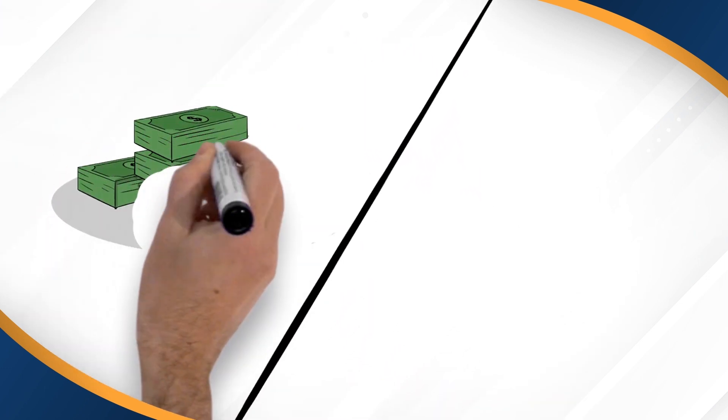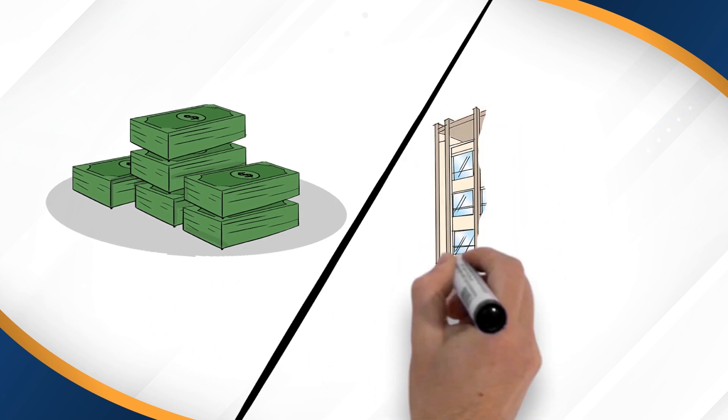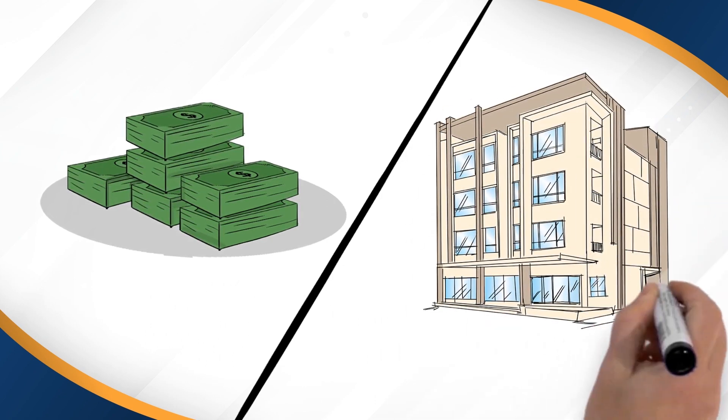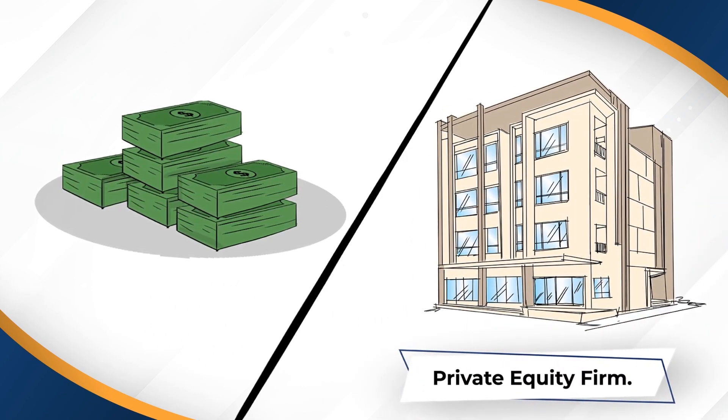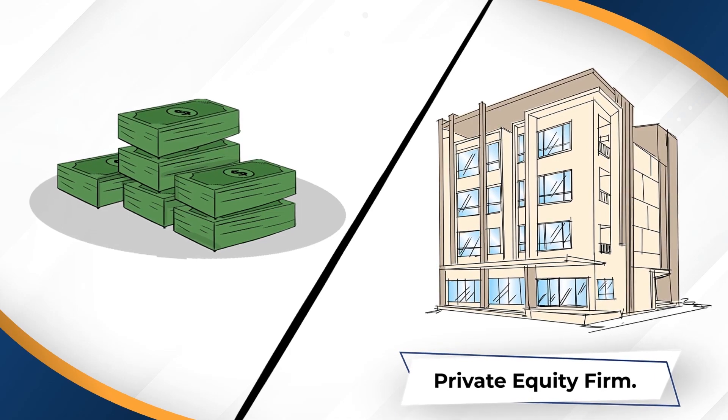After building to scale, the owner of a franchisor often seeks to take some money off the table. Historically, this has meant selling control and the upside of the business to a private equity firm.